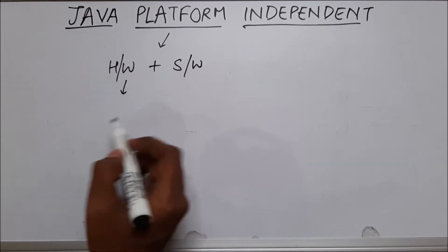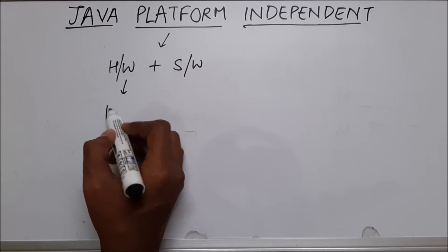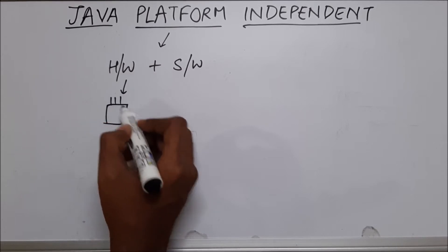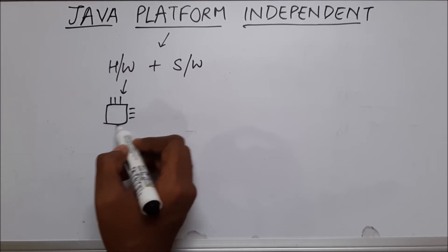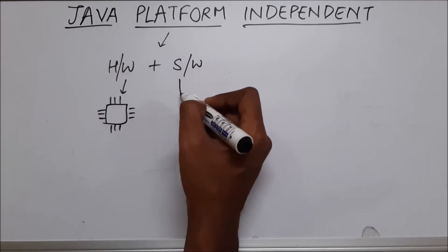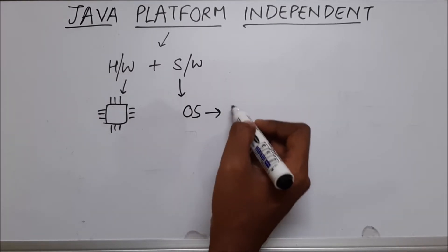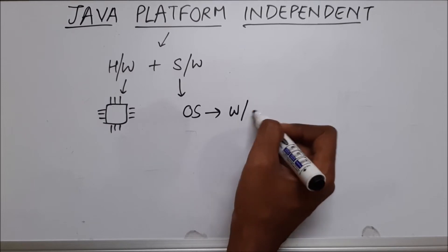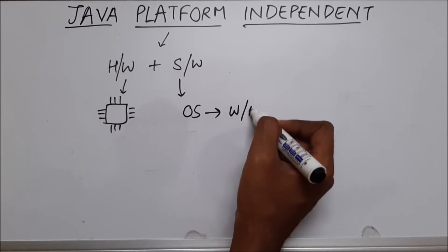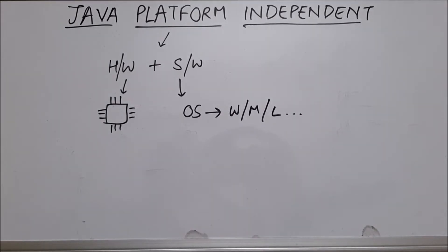Our hardware is our microprocessor or our processor. And our software is our OS — it can be Windows, it can be Mac OS, it can be Linux and many other software. So this is platform.